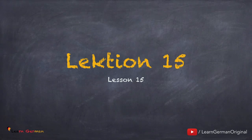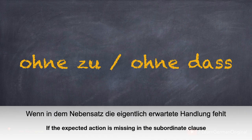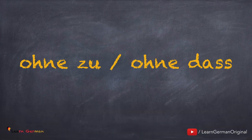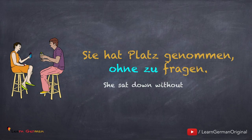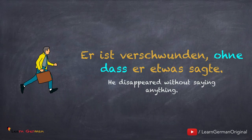Fangen wir an. Lektion 15: Ohne zu oder ohne dass. Wenn in dem Nebensatz die eigentlich erwartete Handlung fehlt, dann benutzt man ohne zu oder ohne dass. Erstmal ein paar Beispiele: Sie hat Platz genommen, ohne zu fragen. Er ist verschwunden, ohne dass er etwas sagte.